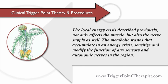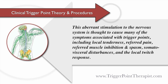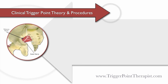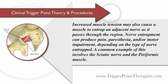The local energy crisis not only affects the muscle but also the nerve supply as well. The metabolic wastes that accumulate in an energy crisis sensitize and modify the function of any sensory and autonomic nerves in the region. This aberrant stimulation to the nervous system is thought to cause many of the symptoms associated with trigger points, including local tenderness, referred pain, referred muscle inhibition and spasm, somatovisceral disturbances, and the local twitch response. Increased muscle tension may also cause a muscle to entrap an adjacent nerve as it passes through the region. Nerve entrapment can produce pain, paresthesia, and/or motor impairment depending on the type of nerve entrapped.